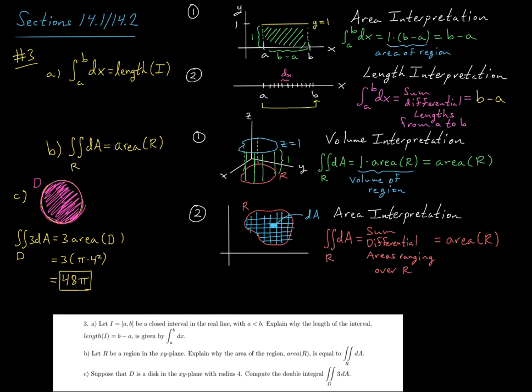Alright, so let's say here's our disk. It has radius 4. Okay, one way to think about this is just to say, well, this 3 can come out front, and this double integral of just dA over our region d is just the, we said here, the area of d.